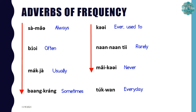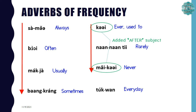Normally adverbs of frequency are added at the end of the sentence, except เคย and ไม่เคย, which are normally added after the subject. For example, ฉันเคยไป means 'I used to go,' and ฉันไม่เคยไป means 'I have never been.'